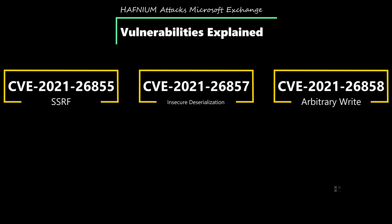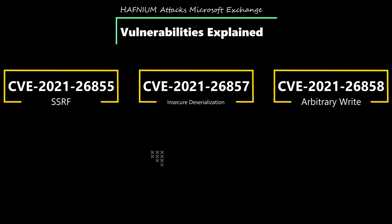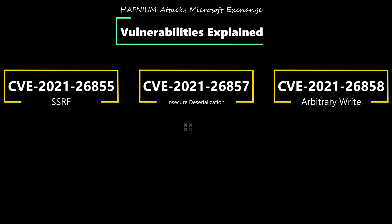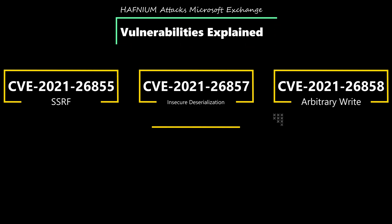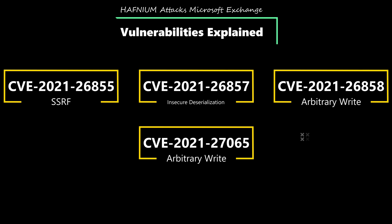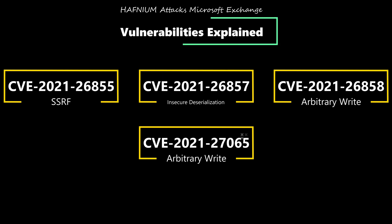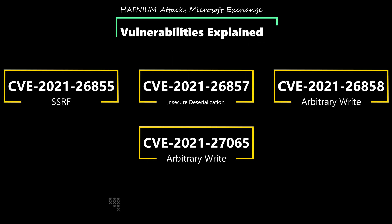CVE-2021-26858 is a post-authentication arbitrary file write vulnerability in Exchange. Any attacker that has been able to authenticate to the server will be allowed to write a file anywhere on that server. CVE-2021-27065 is another post-authentication arbitrary file write vulnerability in Exchange, and similarly allows an authenticated user to write a file anywhere on the server.